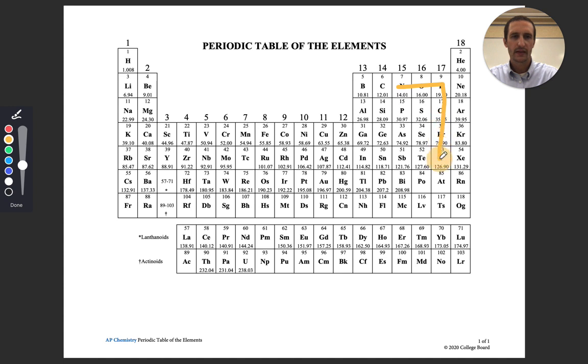To remember the rule of seven, find element seven, and then draw what looks like a seven on your periodic table. Do you see how that looks like a seven? There's some of your diatomics right there: nitrogen, oxygen, fluorine, chlorine, bromine, iodine. And then to get the seventh element, we have to grab hydrogen. So remember the rule of seven: find element seven, make a seven, don't forget hydrogen.